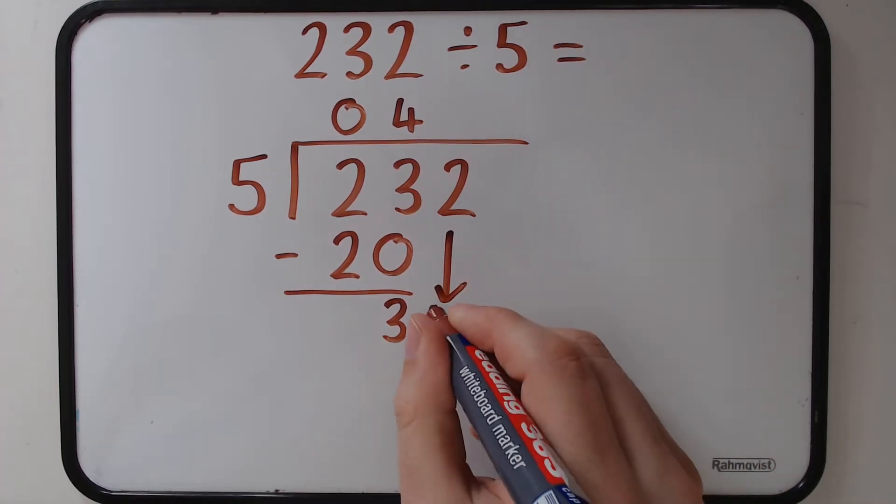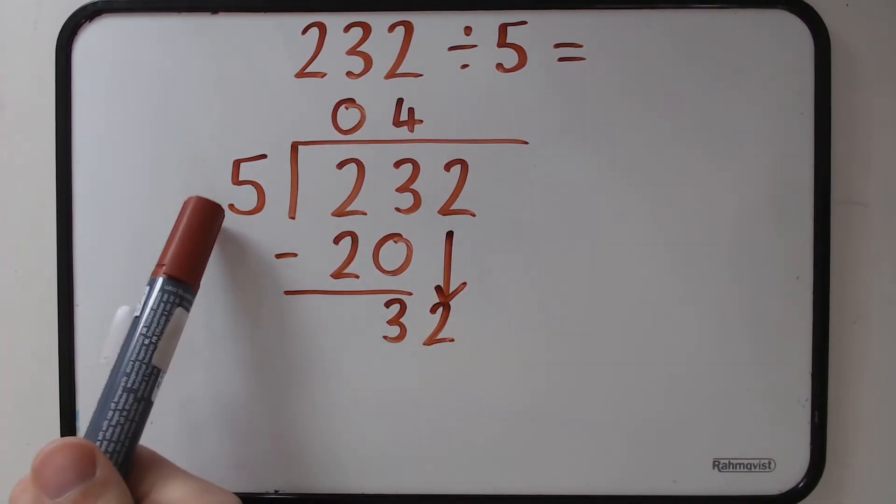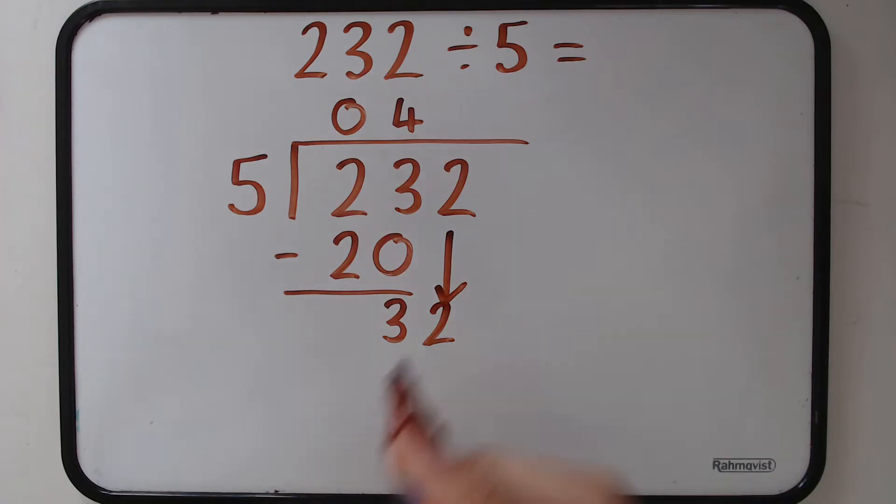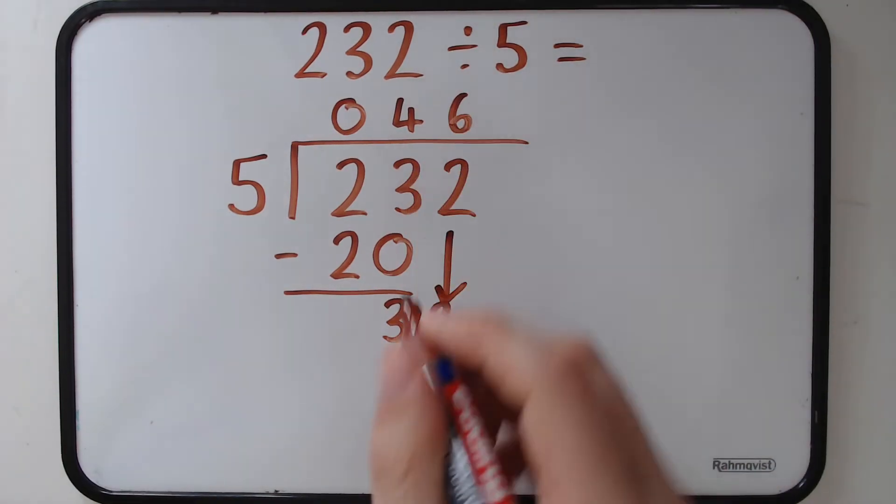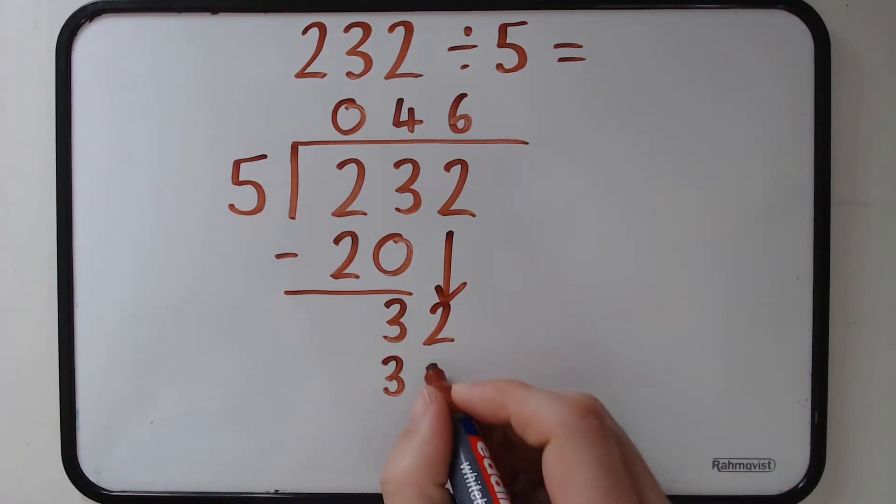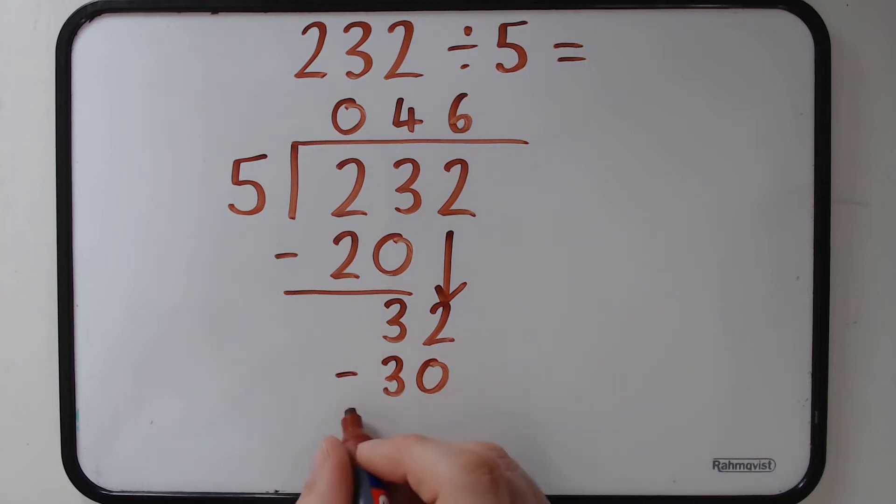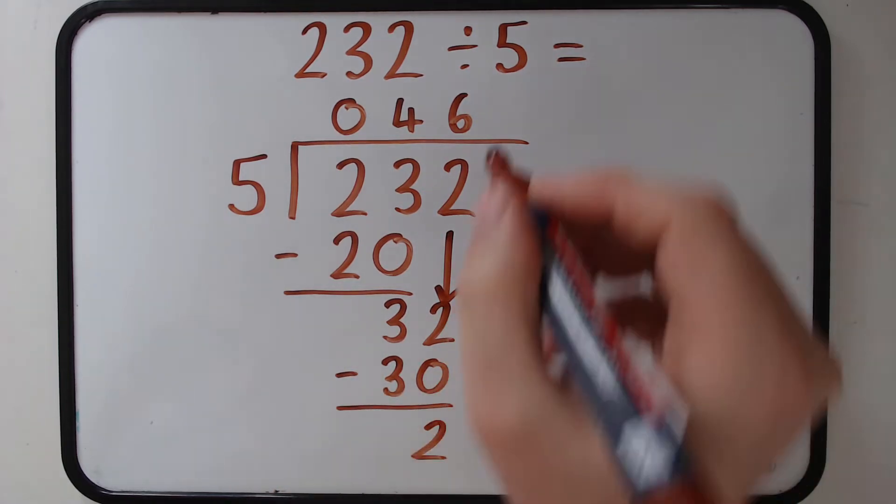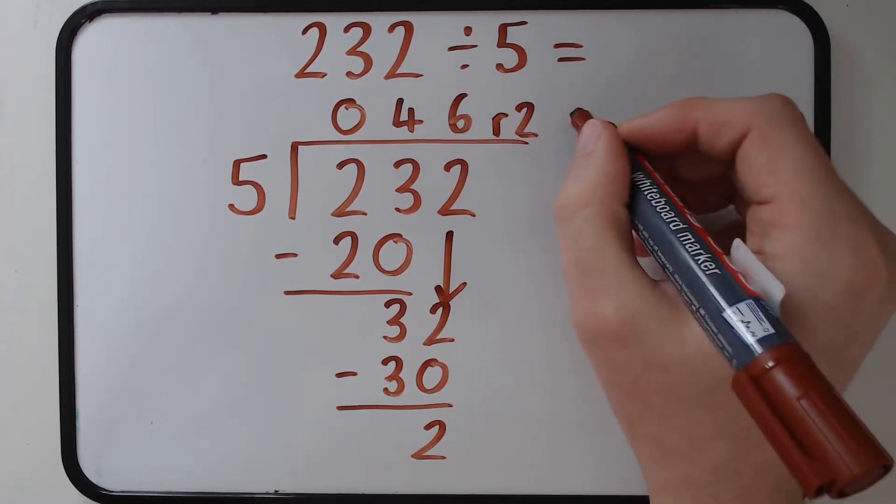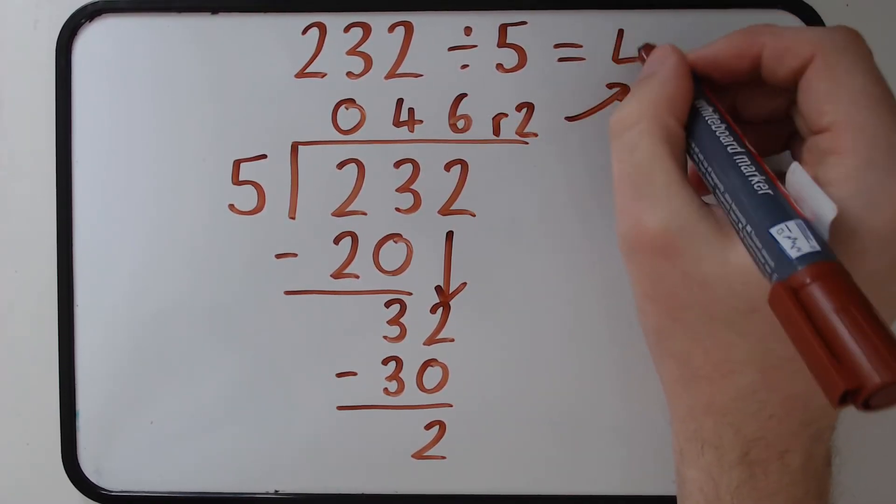We need to bring down the last number to make 32. How many 5s go into 32? I know 6 5s make 30. So I need to take away the 30 from there. And that will leave us with our remainder as the 5 cannot go into the 2. And we need to remember to put the r in the 2 up there and then put it up on our answer.